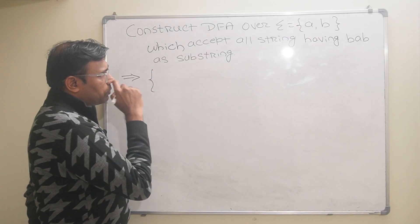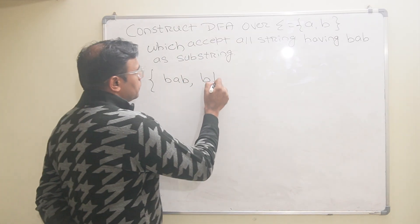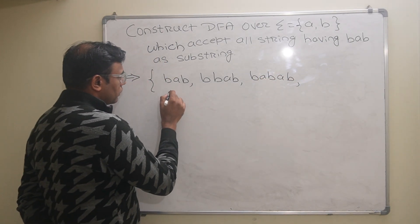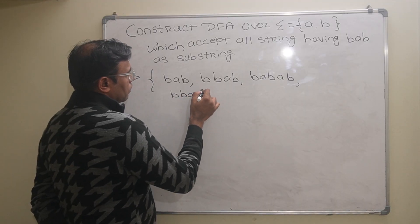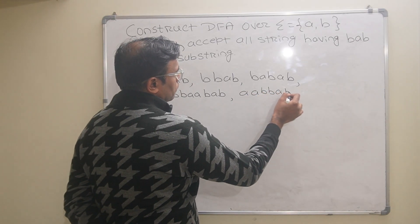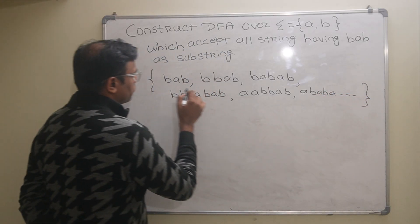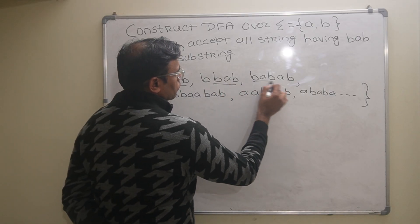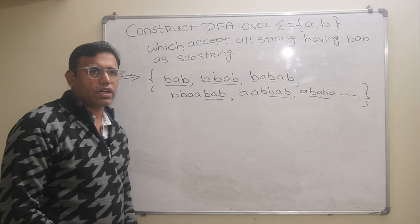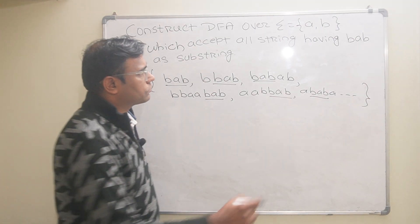First, let us write the possible strings which will contain BAB as a substring. So BAB is the first value, then BBAB, then BAB, then BBAABAB, and so on. In every string there is BAB as a substring. So these are the possible values, and using these values we will try to construct the DFA.